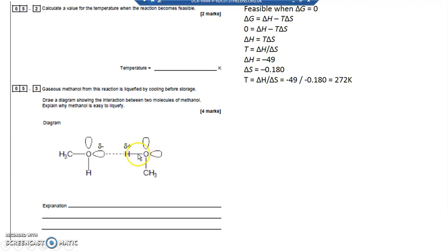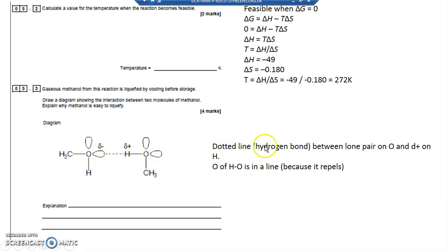A hydrogen bond forms between a hydrogen and an oxygen, nitrogen, or fluorine. Oxygen is much more electronegative than hydrogen, so the hydrogen ends up with a delta plus, and the lone pair of electrons on the oxygen attracts that delta plus. The lone pairs on one oxygen attract the hydrogen of the other molecule, and the lone pairs on the other oxygen are pushed the other way, so you get a linear arrangement: oxygen–hydrogen–oxygen, shown with a dotted line.